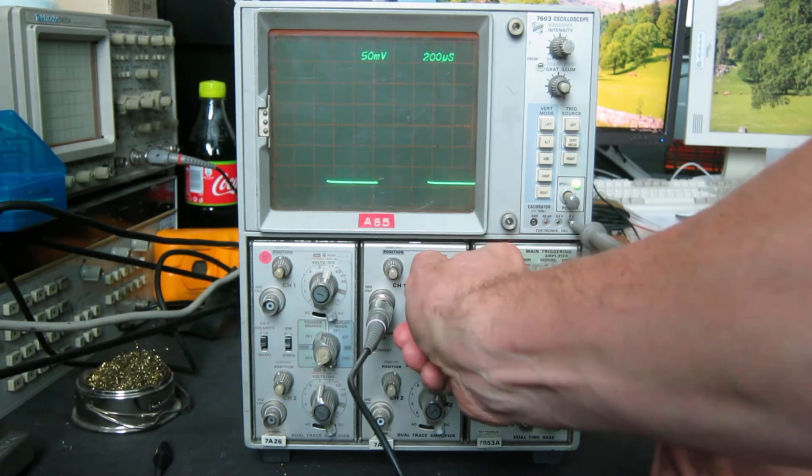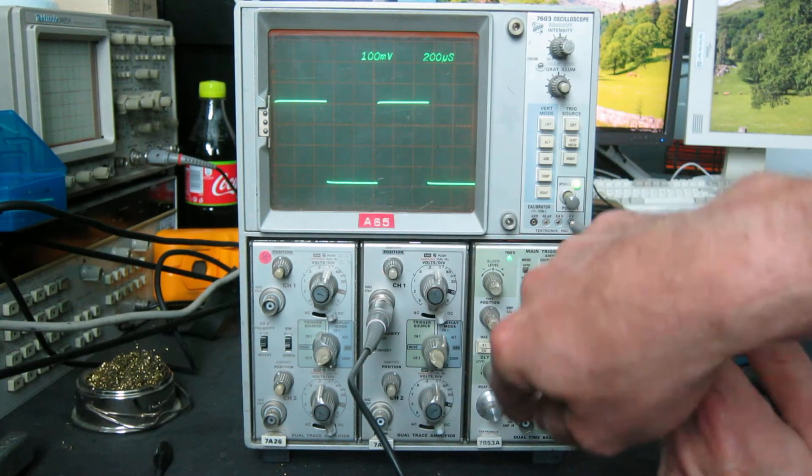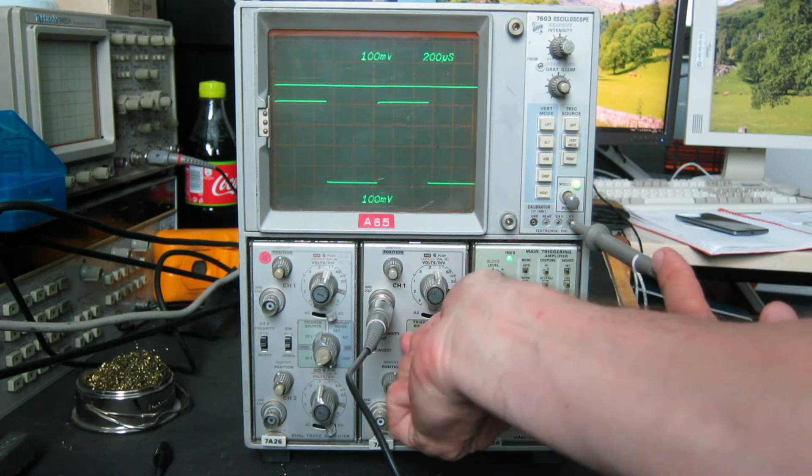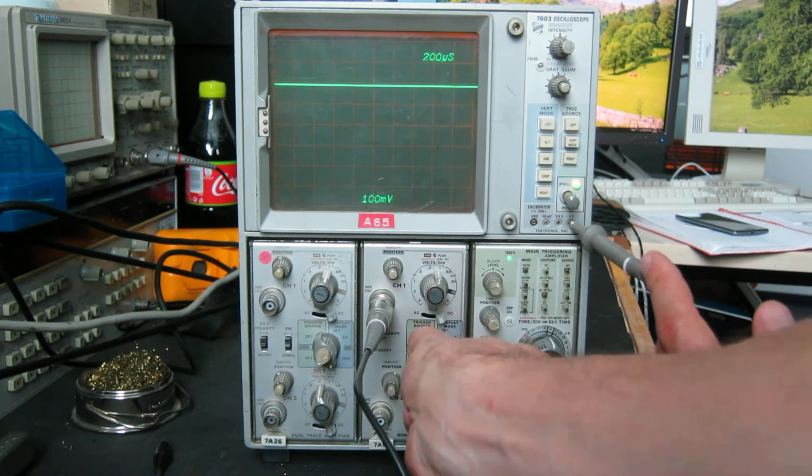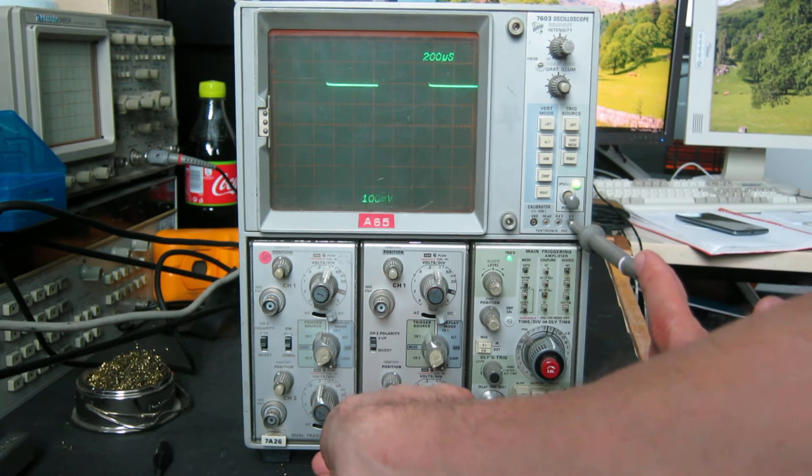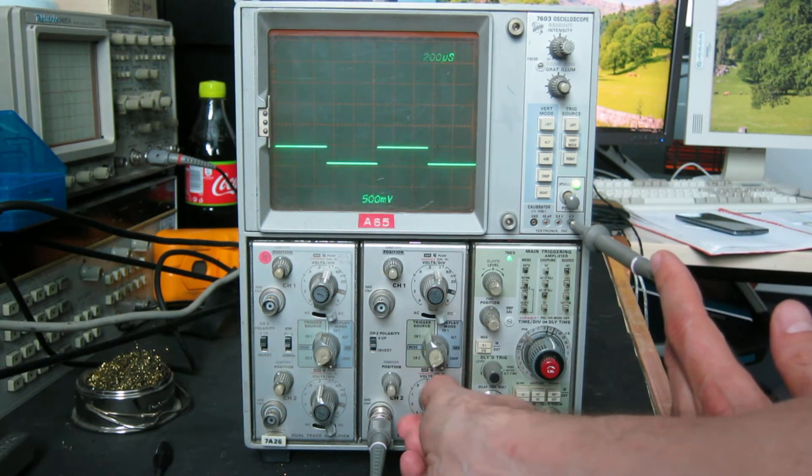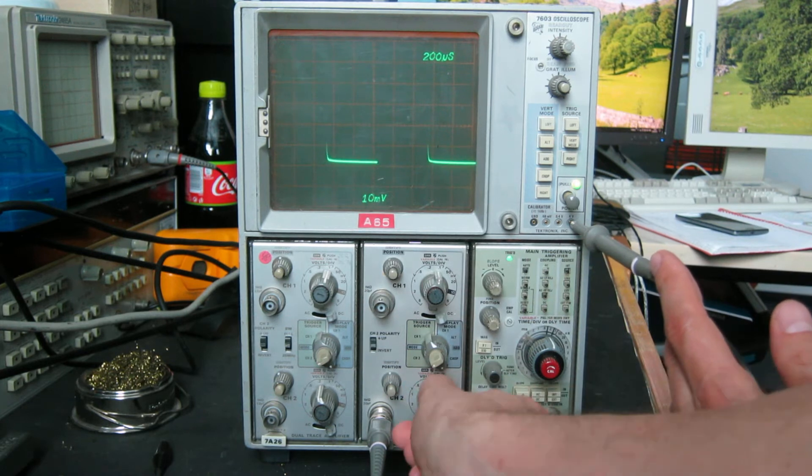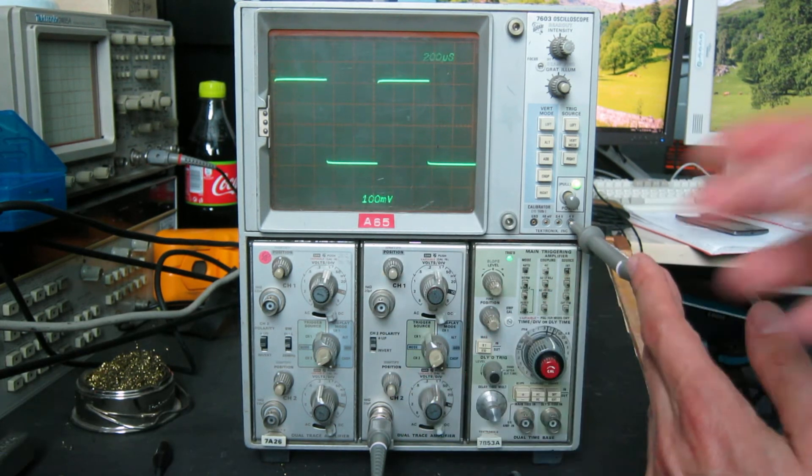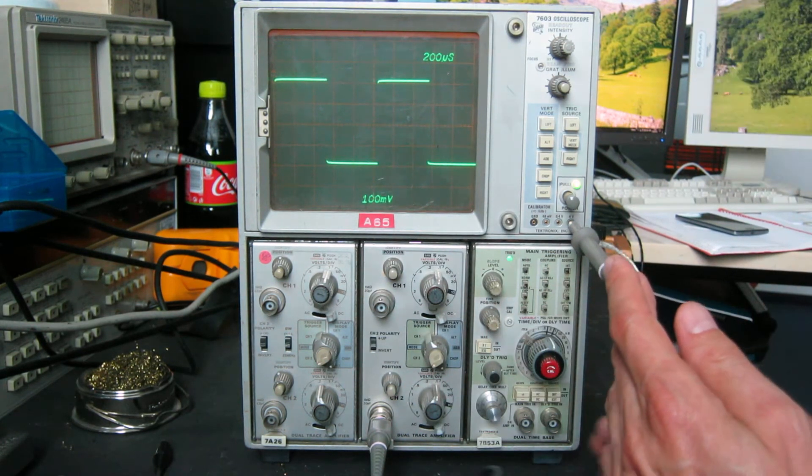Different attenuator settings all working happily, notice the readouts followed us. And we'll go to the fourth channel, change the triggering source to that one, and it's a bit off the screen, but that's also in good order. I haven't recompensated the probe for each of the different channels because I'm just demonstrating this quickly.